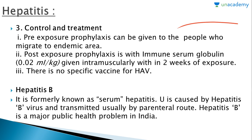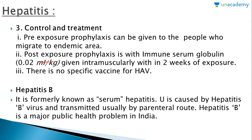Control and treatment of hepatitis A: pre-exposure prophylaxis can be given to people who migrate to endemic areas. Post-exposure prophylaxis is served with immune serum globulin given intramuscularly within two weeks of exposure. There is no specific vaccine for hepatitis A virus.